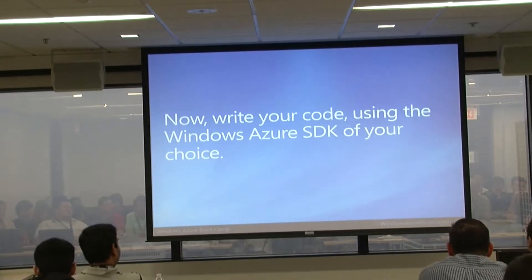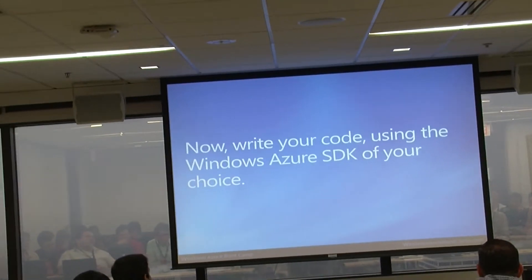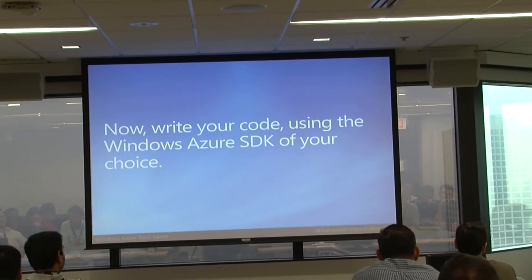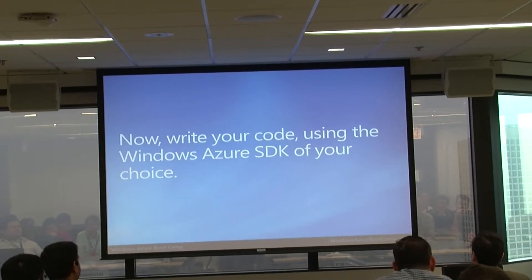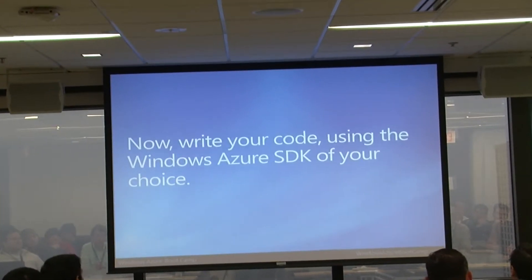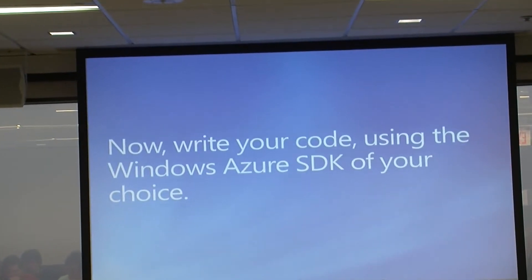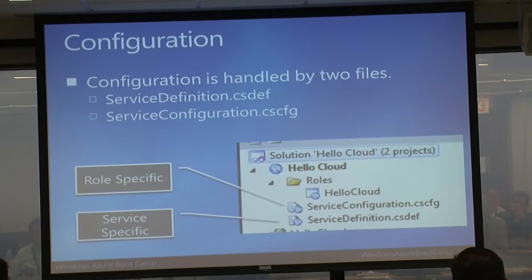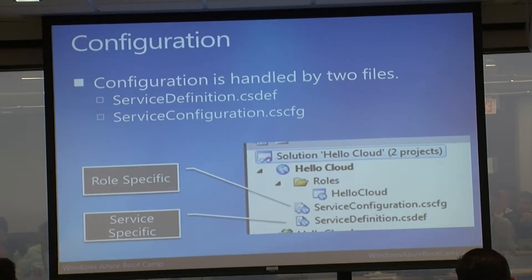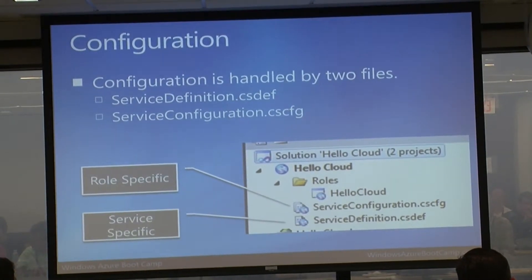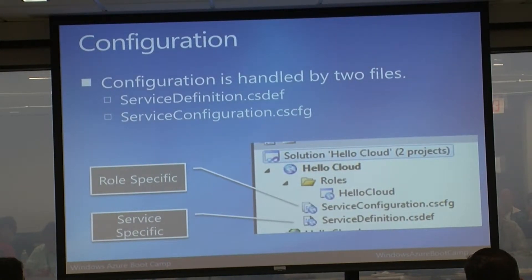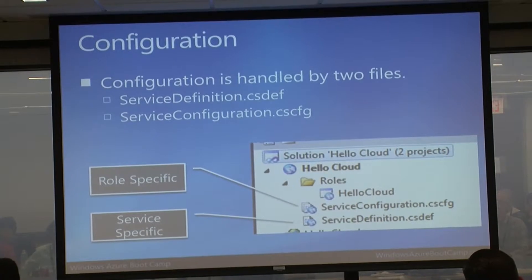That's the Visual Studio template - hopefully that gets you started. Now's the point where you write the code. After writing the code using whichever Windows Azure SDK you're most comfortable with, you'll want to do some configuration. Let me go through the post-code deployment stuff quickly, then I'll go into Visual Studio and show the actual code.